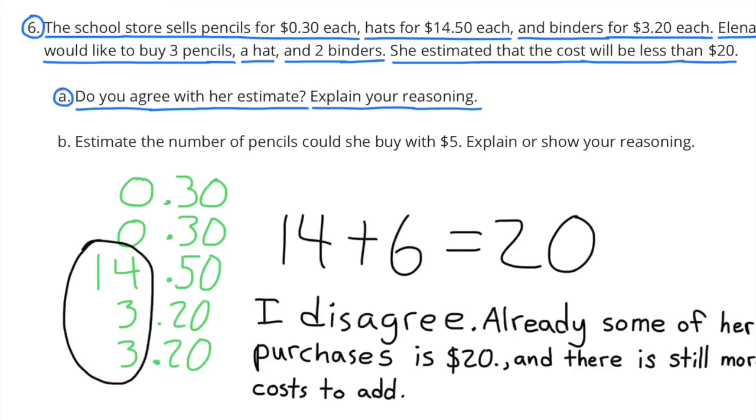Number 6: The school store sells pencils for 30 cents each, hats for $14.50 each, and binders for $3.20 each. Elena would like to buy 3 pencils, a hat, and 2 binders. She estimated that the cost will be less than $20. Part A: Do you agree with her estimate? Explain your reasoning. Well, I've lined up the decimals of the items that she'd like to purchase, and I just added up the dollars, and the dollars already came to 20. So I disagree. Already, some of her purchases total up to $20, and there are still more costs to add up.